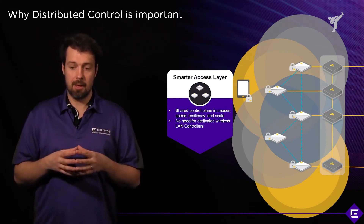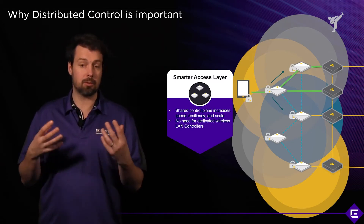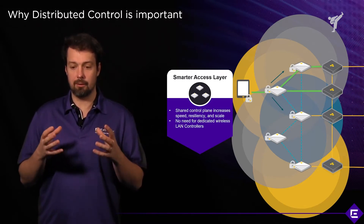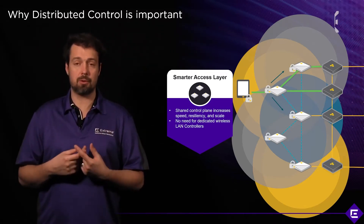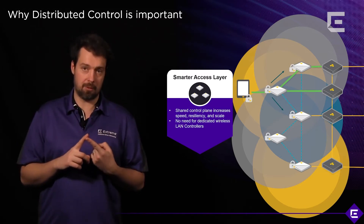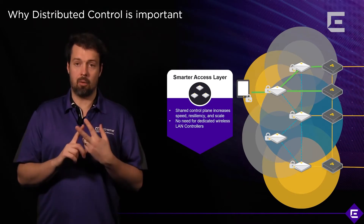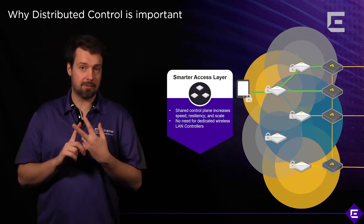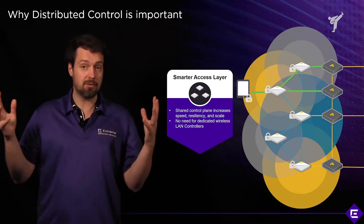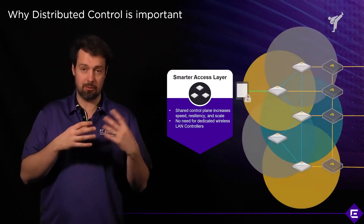The access points will exchange information with each other using distributed control protocols. That information will enable them to make smart decisions in terms of which channel to select and use to reduce interference on a frequency band, and how much power to consume to provide connectivity or to cater for a failed AP to increase coverage. They will dynamically increase or decrease power and dynamically change channels to avoid interference.